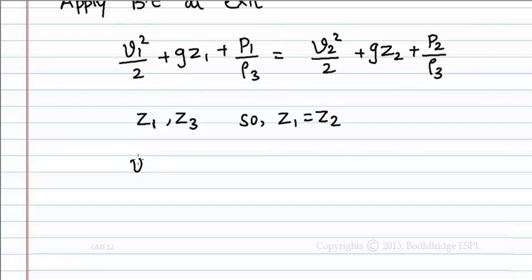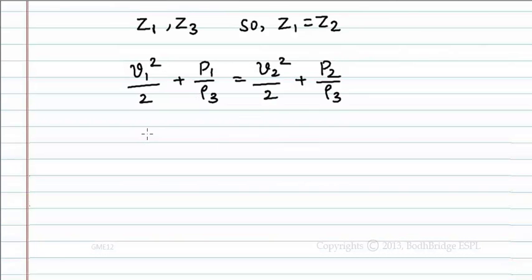So the equation becomes v1 squared by 2 plus p1 by rho3 equals v2 squared by 2 plus p2 by rho3. But the liquid is stable, that is v1 equals 0, and the pressure p1 is equal to atmospheric pressure p_atm.